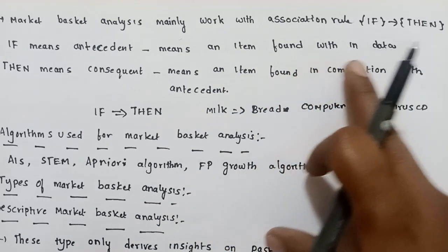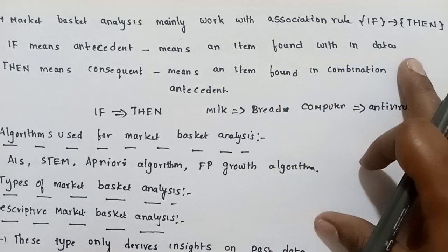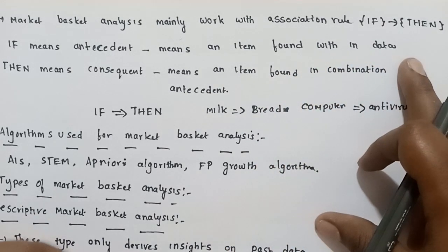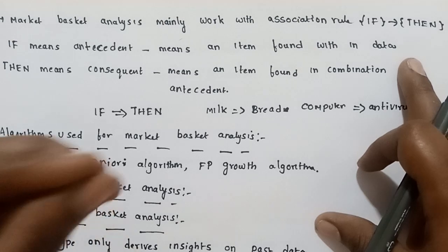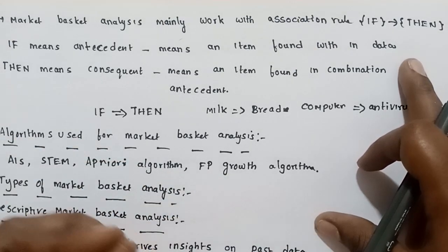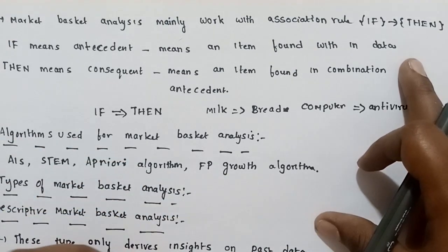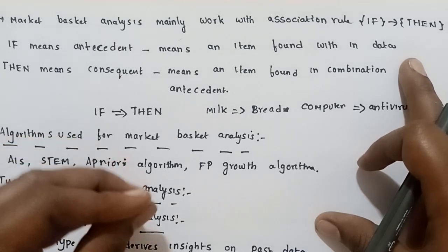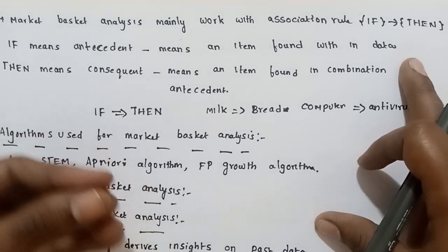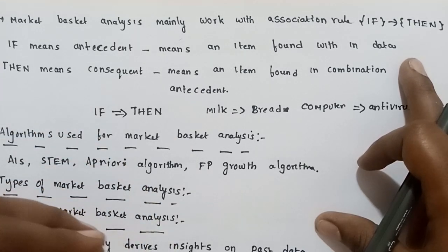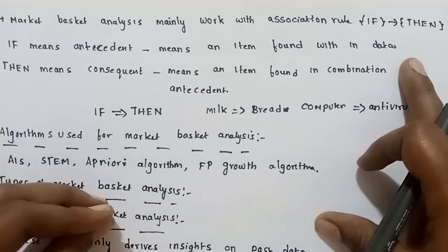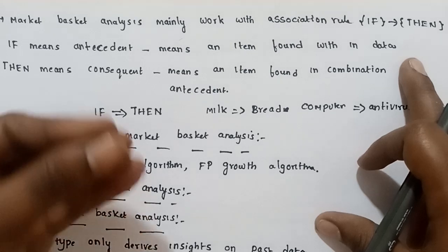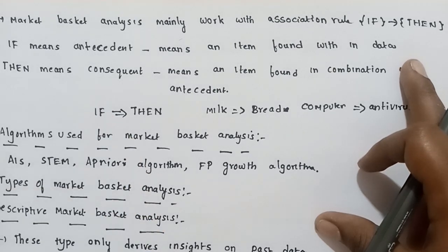Suppose, for example, the item 'milk' is found within the data. If the customer buys milk, then what he buys next is bread — that is the consequent. That means if one data item comes, the next data item will follow.